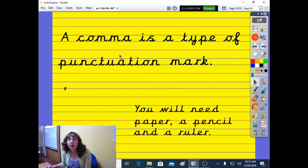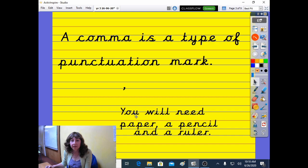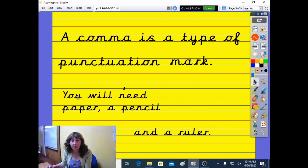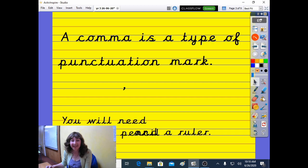So a comma sits on the line. So here's our handwriting lines that you're used to seeing. And if we just bring this phrase up and we pop it onto the line, you can see that the comma would sit in the same sort of position as a full stop. That's where it would go.